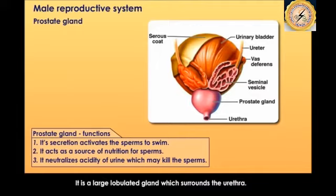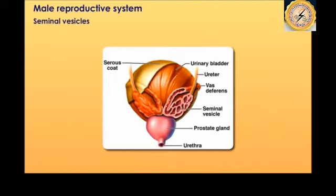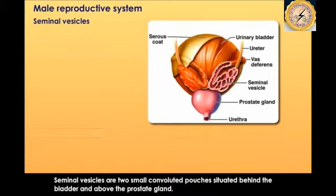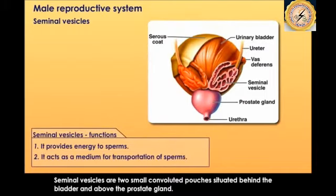The seminal vesicles are two small convoluted pouch-like structures located behind the bladder and above the prostate gland. They provide energy to the sperms and act as a medium for the transportation of the sperms.